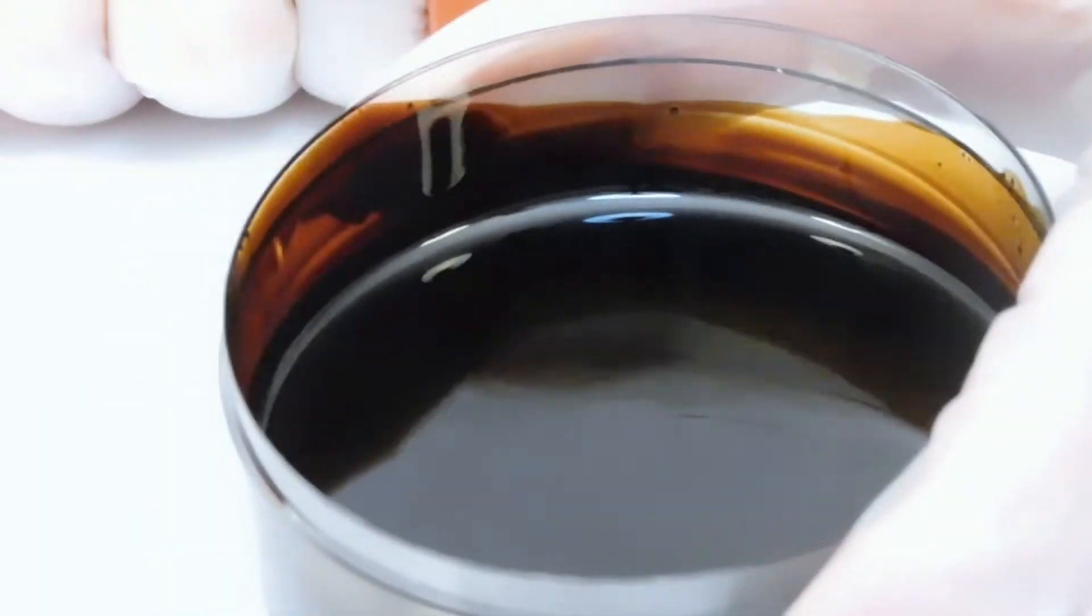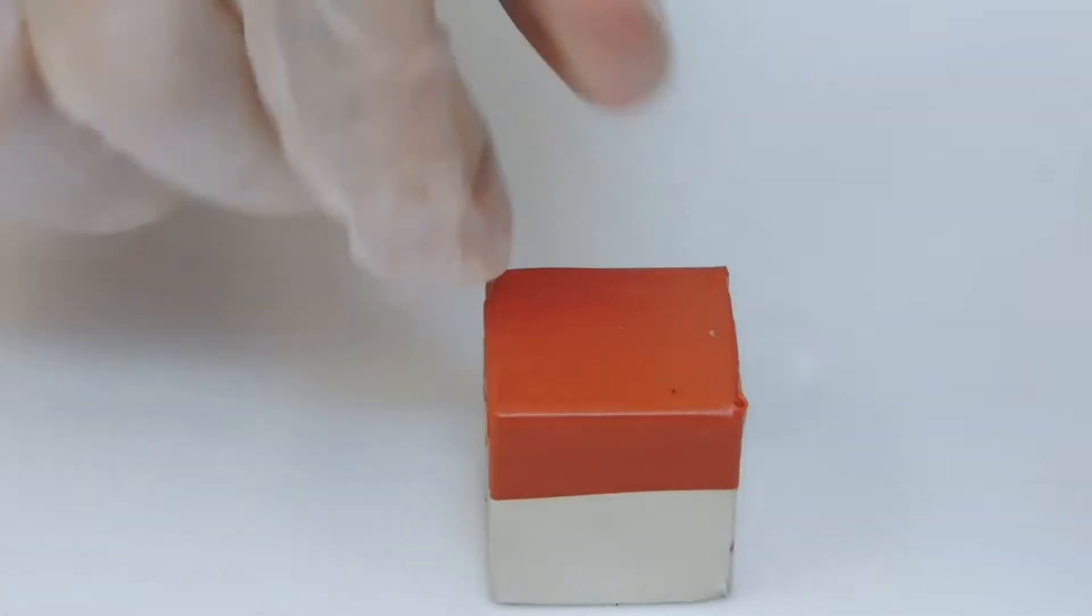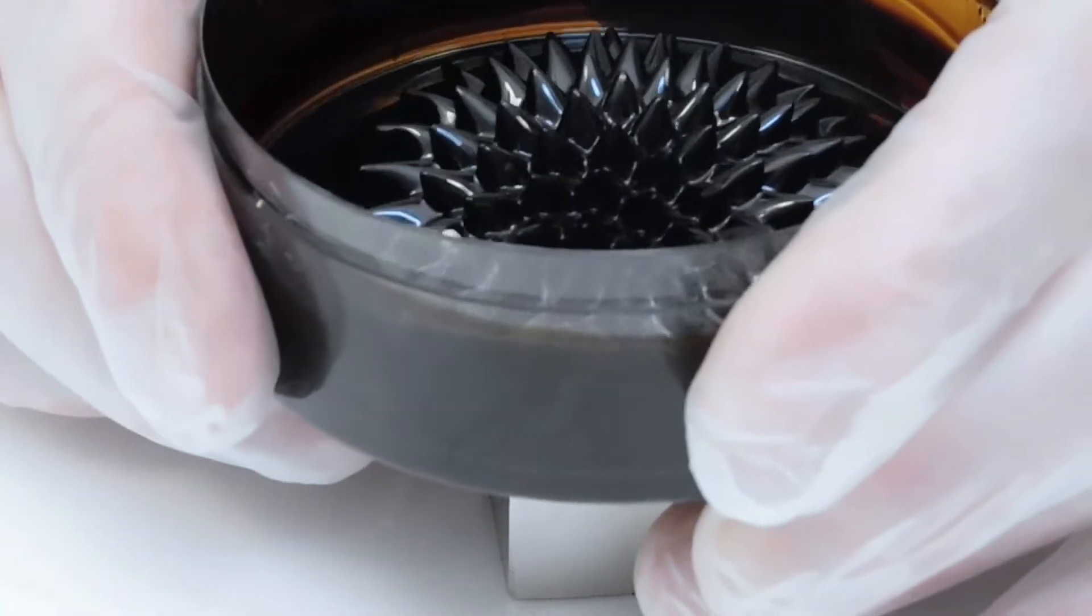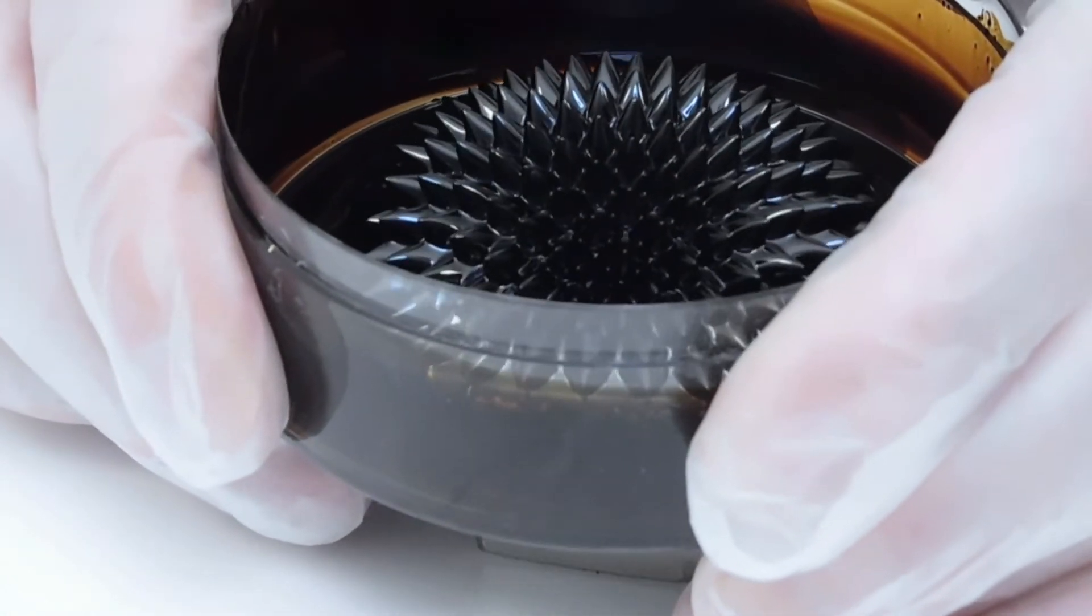This fluid is modeled after rocket fuel that NASA invented. When we put it over a magnet, the oil shows part of the magnet's force field. We'll look at this more closely in a moment, but first, let's learn the basics about magnets.